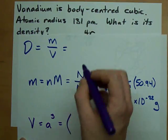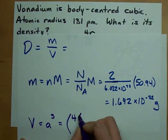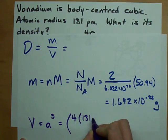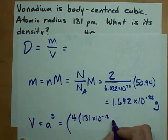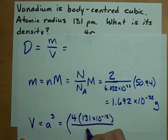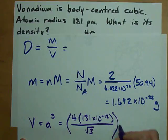The edge length, according to our formula, is 4 times 131 picometers divided by the square root of 3. And we're going to cube that.